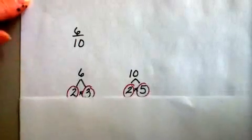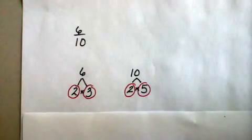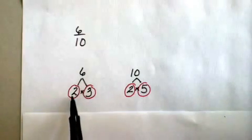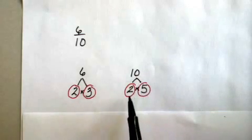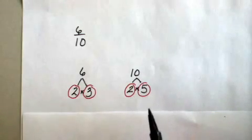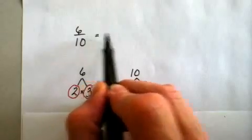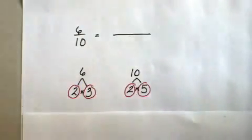the first step is to find the prime factorization of each number, which I have already done for you. Prime factors of 6 are 2 times 3. The prime factors of 10 are 2 times 5. So I take those factors and I write them in the